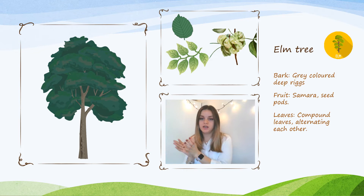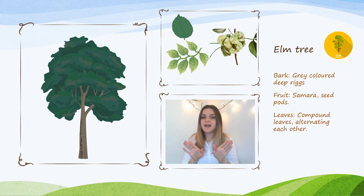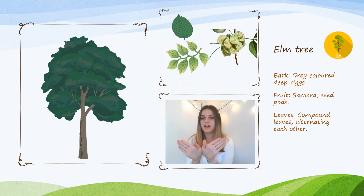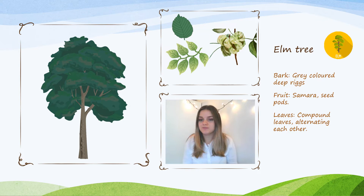Elm trees also have compound leaves, which means lots of leaves grow on one same branch. The key difference from ash trees is that elm trees never have their leaves opposite each other. While the ash tree has leaves perfectly opposite along the branch, the elm tree takes it in turns — you have one leaf, then it alternates, growing along the stem. So when you find a tree with this bark and compound leaves, use this clue to figure out if it's an ash tree or an elm tree.